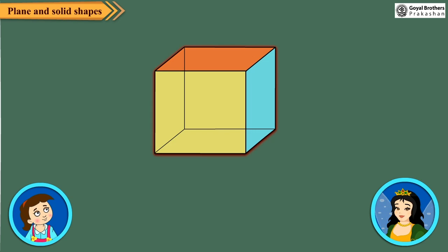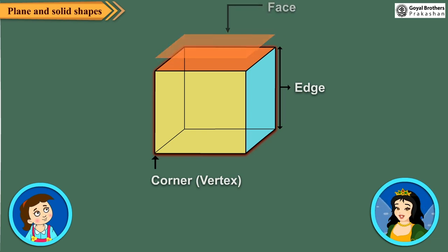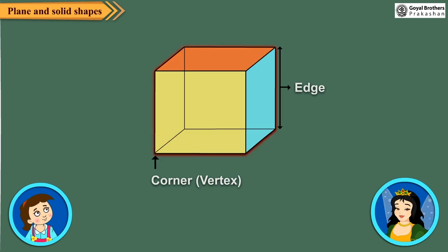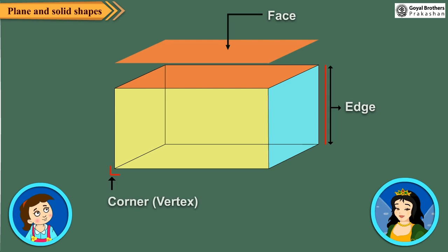Solid shapes have faces, edges and vertices or the corners. Here is a solid shape. It looks like a dice. This is a cube. It has six flat faces, twelve edges and eight vertices, and all its edges are equal. This is a cuboid. It looks like a pencil box or a brick. It also has six faces, twelve edges and eight vertices.